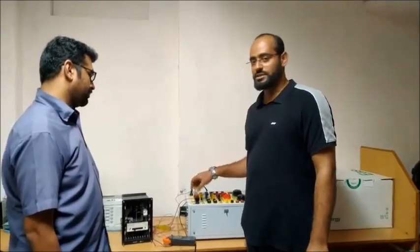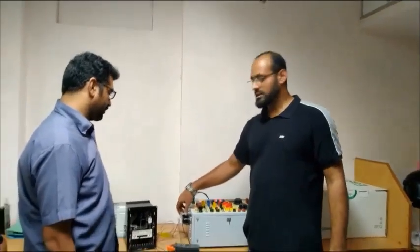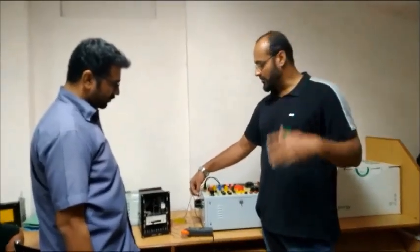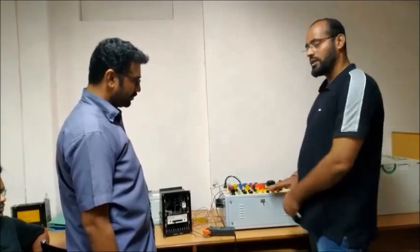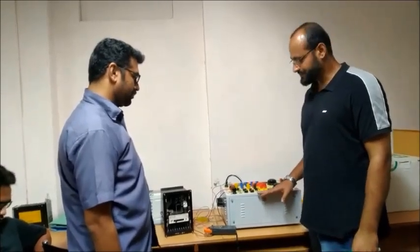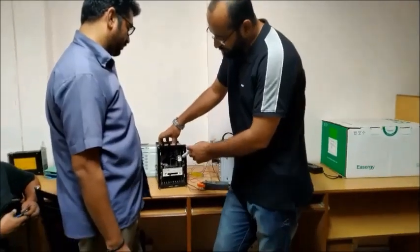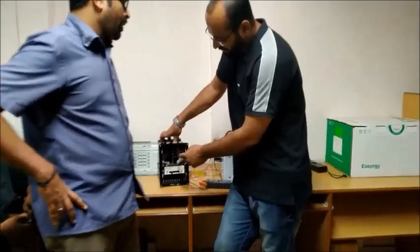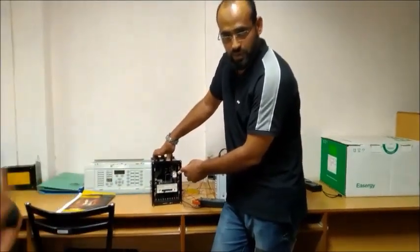We inject the same value current in the field side. This CT current is coming from the field side, but here we connect in the fault simulation kit and this is our relay. So here basically there are two types of coils inside. First is a disk coil and the second one is our pickup coil.